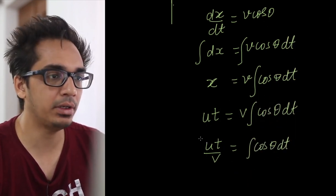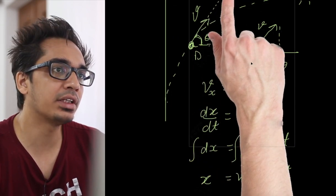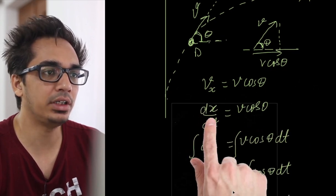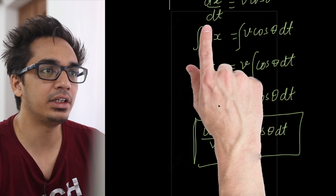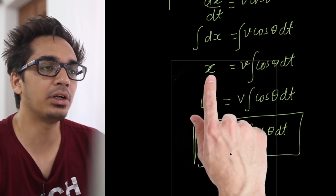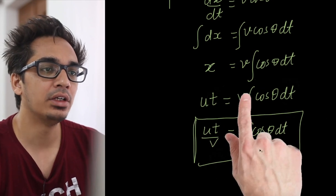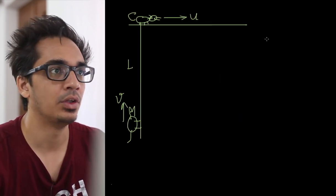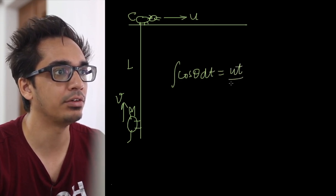तो यह box कर लेते हैं: ∫cos theta dt = ut/v. Recap: किसी भी instant पर dog की velocity v, cat की तरफ angle theta, x-component v cos theta, dx/dt = v cos theta, integrate किया, x को ut लिखा, ut = v ∫cos theta dt, इसलिए ∫cos theta dt = ut/v। Question का पहला part खत्म।